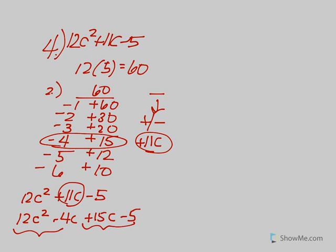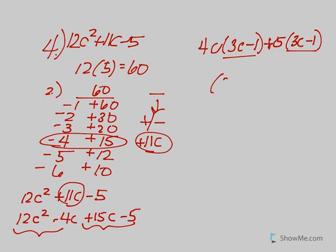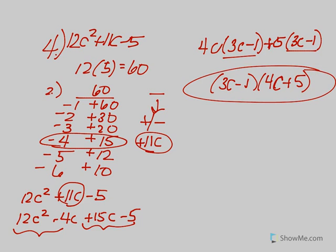Factor by grouping. From the first two terms, pull out 4c, leaving 3c - 1. From the second two terms, pull out positive 5, leaving 3c - 1. Pull out (3c - 1), and you're left with (4c + 5). Final answer for number 4.